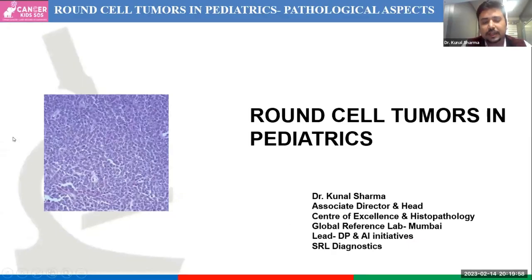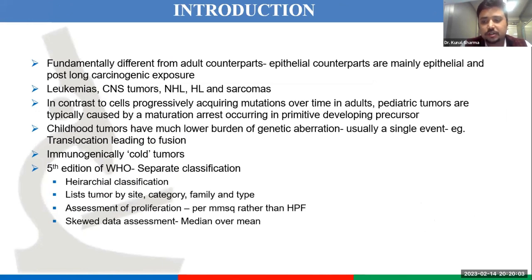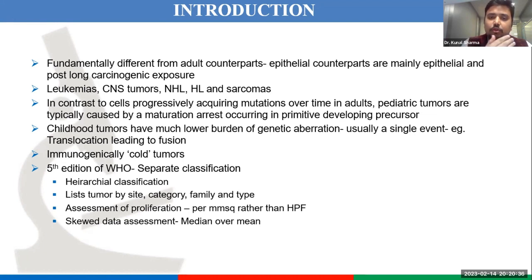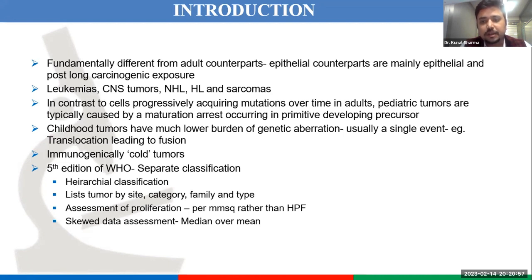Let's begin with an introduction to pediatric small round cell neoplasms and how they differ from adult counterparts. In adults, epithelial tumors predominate; in pediatric age group, mesodermal or hematolymphoid neoplasms predominate. Adult tumors arise after long carcinogenic exposure, whereas pediatric tumors are usually due to an arrest in maturation of a primitive developing counterpart. The most commonly encountered neoplasms in pediatric age group are leukemias, CNS tumors, non-Hodgkin lymphomas, Hodgkin lymphomas, and sarcomas. Childhood tumors have a much lower burden of genetic aberrations — usually a single event, such as a translocation leading to a fusion.